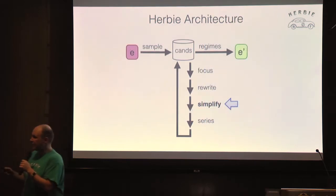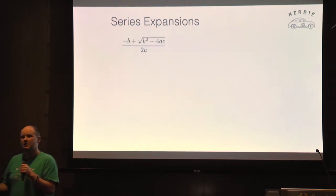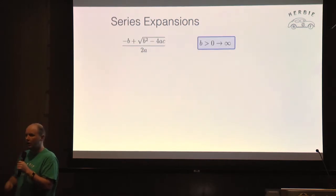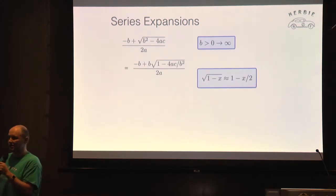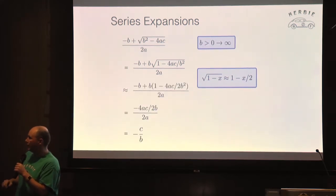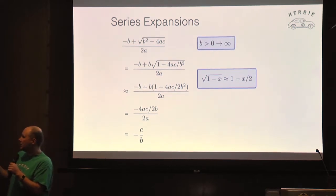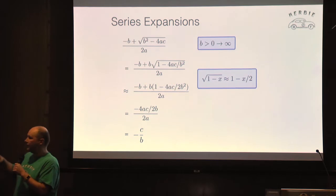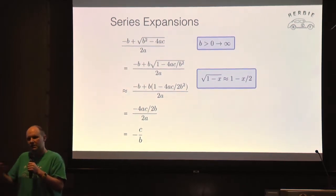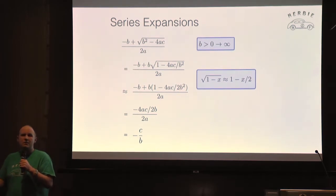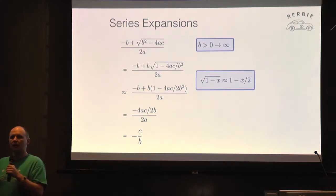Another key trick in Herbie's arsenal is taking series expansions of real expressions. This is how we get those weird fractions that appeared when we first started talking about Herbie. When B is positive, we take the expansion of the square root and simplify down to a fraction. That's where those weird fractions come from — taking the series expansion and adding simplification gives approximations that work for certain parts of the input domain.